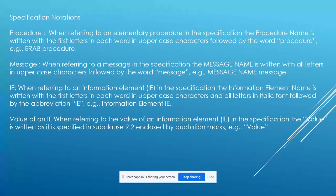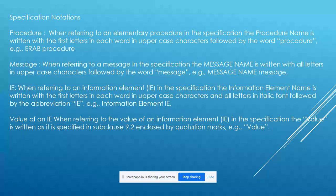Regarding protocol notation, each procedure is referred to by a procedure name where the first letter is written in uppercase, along with a procedure code. Messages are referred to by their message name, and all message names are written in uppercase letters. IEs — Information Elements — carry the actual information values within each message.